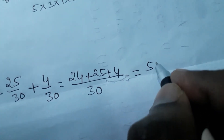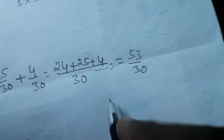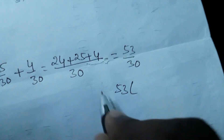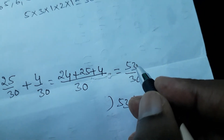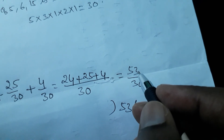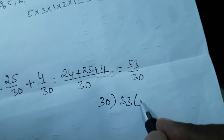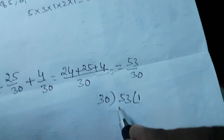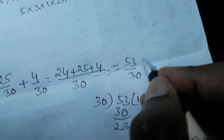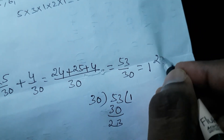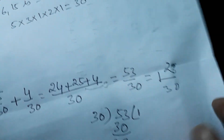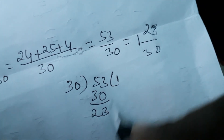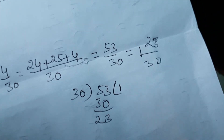53/30 is an improper fraction — the numerator is larger than the denominator. You should not leave the answer as an improper fraction. Divide: 30 goes into 53 once (30 × 1 = 30), remainder is 23. So the answer is 1 and 23/30. This is the final answer for the given addition.